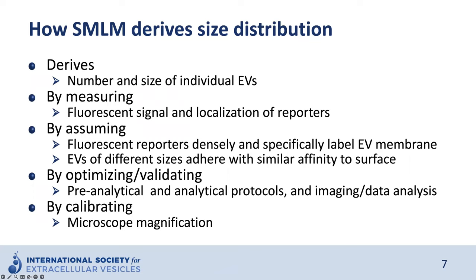SMLM allows us to determine the sizes of all individual EVs detected in the field of view. We can measure the fluorescence signal of reporters that densely and specifically label the EV membrane. These experiments require an optimized pre-analytical protocol, analytical protocol, imaging method, and data analysis routine. In some scenarios, these may need to be validated. Additionally, the instrument should be calibrated — for example, laser powers and localization of individual probes are typically calibrated.